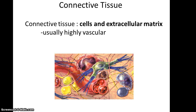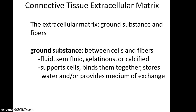Below you see an artistic rendition of many of the connective tissues altogether — you would never see anything quite like this in a living or dead human body. The extracellular matrix is composed of two categories: the ground substance, which can vary from tissue to tissue, and fibers. The ground substance is what's between the cells and the fibers. It can be a fluid such as blood plasma, semi-fluid or gelatinous such as in cartilage, or calcified as found in bones. Its roles include supporting the cells, binding them together, as a storage place for water, and as a medium of exchange.